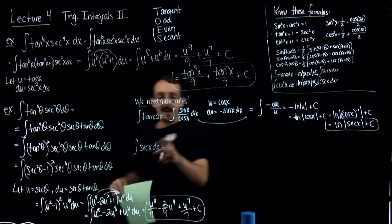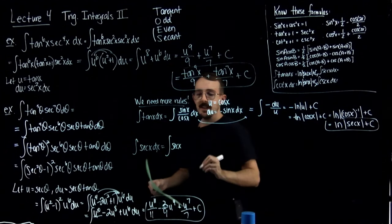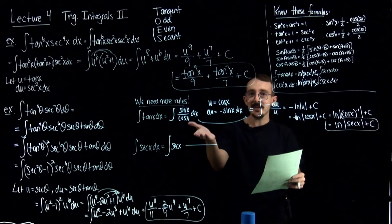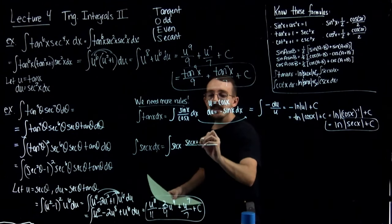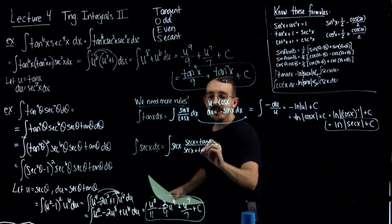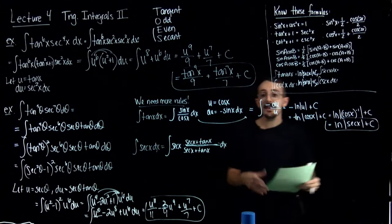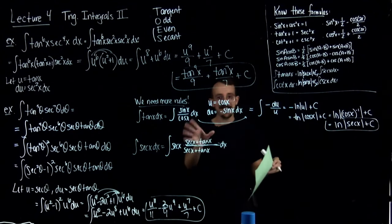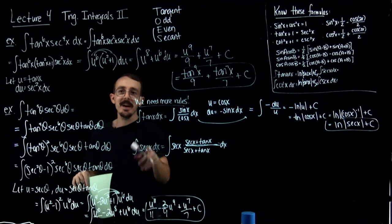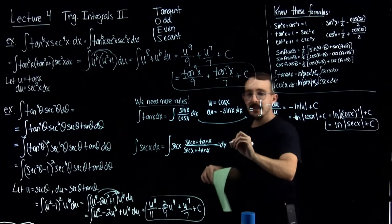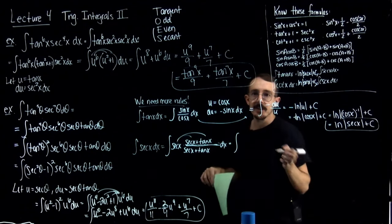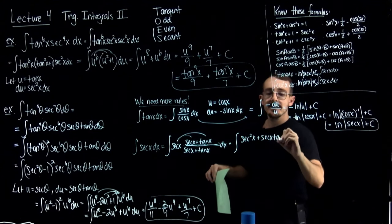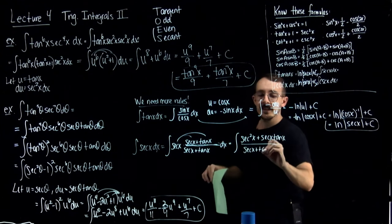This next one is a little more tricky — the integral of secant x. A very unintuitive first step is to multiply the top and the bottom by secant x plus tangent x. There's no logical reason why that should be the next step; someone just tried it and it worked. My goal is to prove this is true. Distributing secant x in the numerator gives secant squared x plus secant x tangent x, all over secant x plus tangent x, dx.